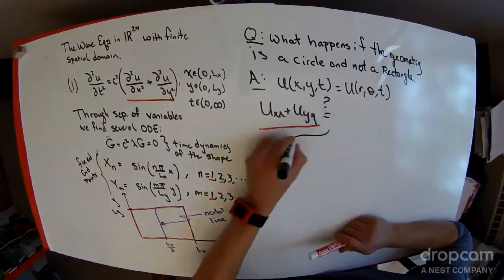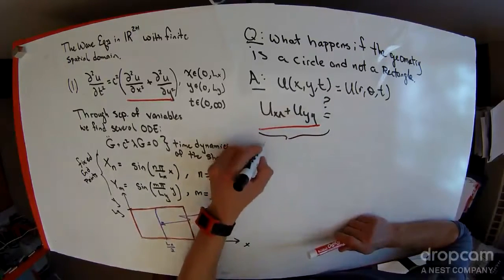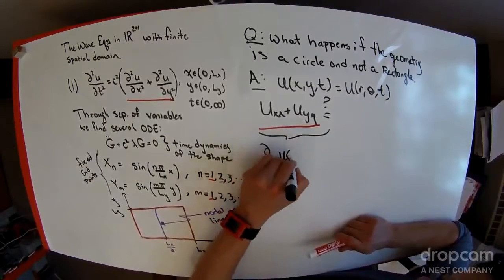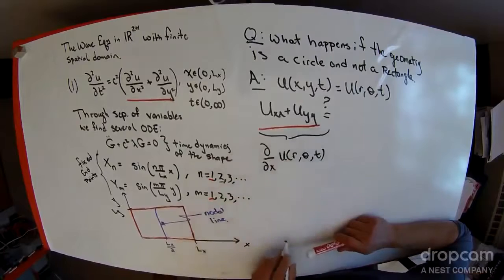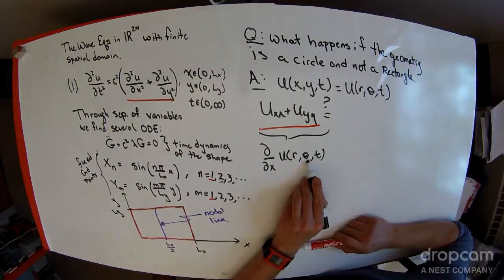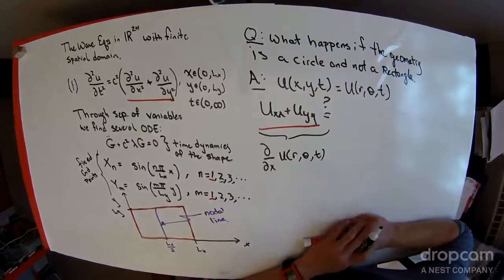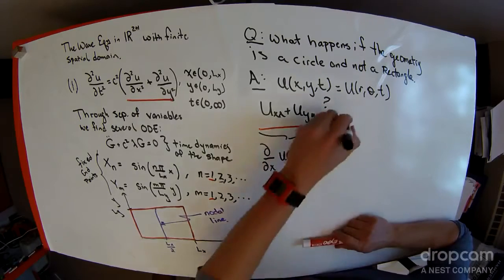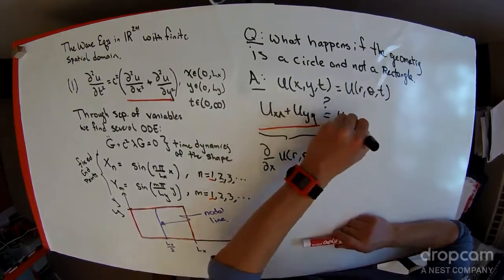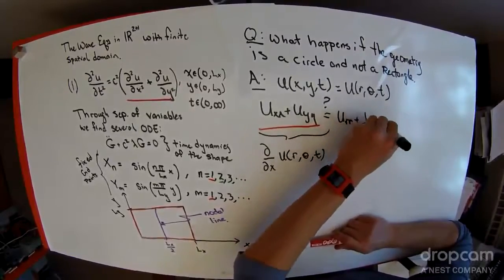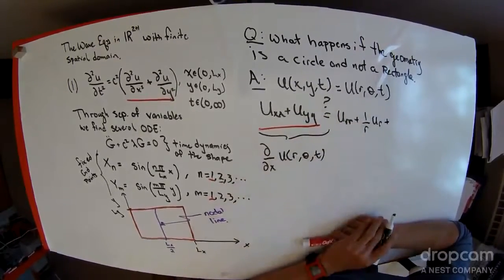Right, so maybe as an aside really quick, that means that I want to take the derivative with respect to x of a function of u, which is a function of r theta and t. I don't see any x's explicitly, they're inside the r's and thetas, and that's a statement of multivariate chain rule.